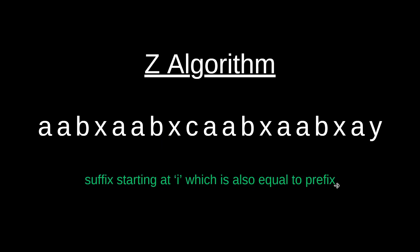We have the Z algorithm. What is a Z algorithm? It means a suffix starting at the ith position which is also equal to a prefix. Bear with it till the end and you will understand it.